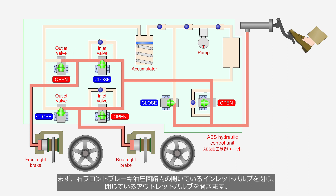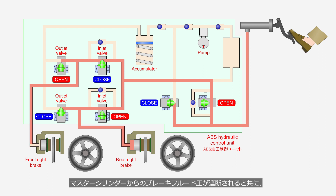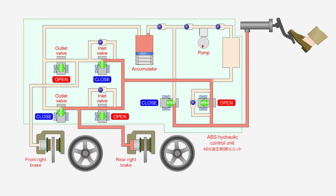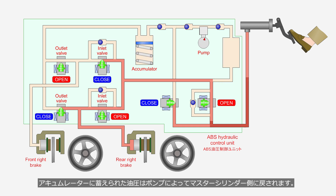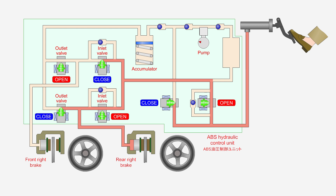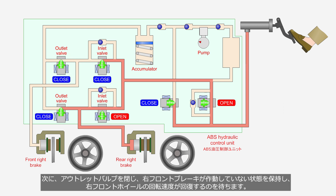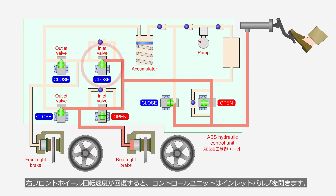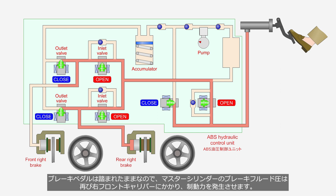First, within the hydraulic circuit of the right front brake, the open inlet valve is closed and the closed outlet valve is opened. As the brake fluid pressure from the master cylinder is cut off, the brake fluid pressure acting on the front brake caliper is released into the accumulator, causing the right front brake to be released. The hydraulic pressure stored in the accumulator is returned to the master cylinder side by the pump. Next, the outlet valve is closed to maintain the right front brake in a non-operational state, and it waits for the rotational speed of the right front wheel to recover. Once the rotational speed recovers, the control unit opens the inlet valve, and with the brake pedal still depressed, the brake fluid pressure from the master cylinder is once again applied to the right front caliper, generating braking force.